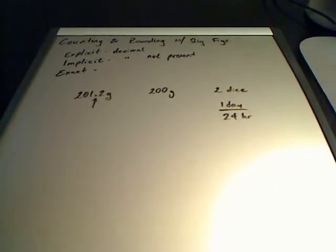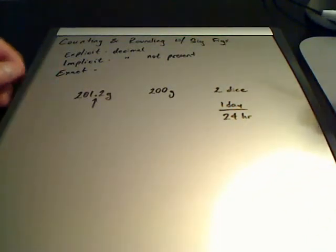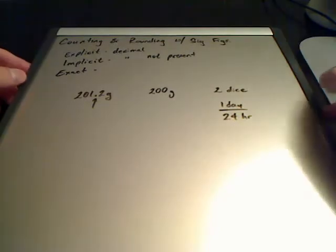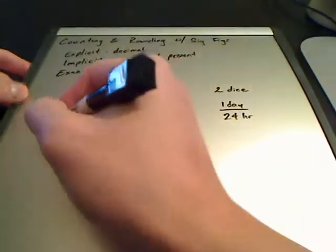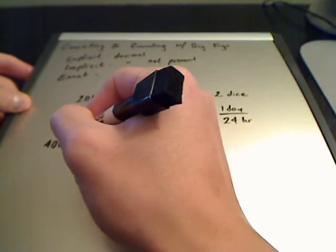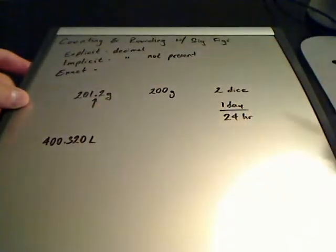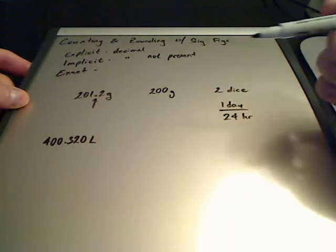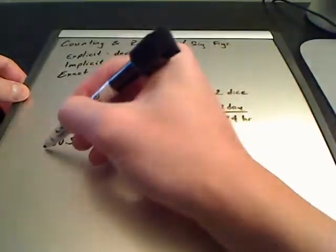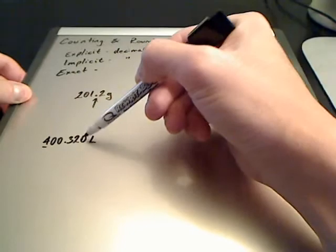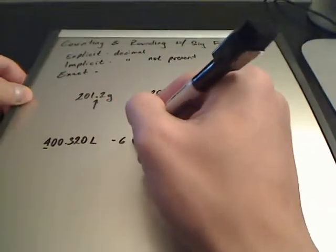Once we understand that, we can move into counting and rounding. For explicit and implicit, you always start with your first non-zero — any zeros in the front never count. Let's say we do 400.320 liters. It's explicit. The rule for explicit is you always start with your first non-zero, in this case the 4, and you count everything to the right: 4-0-0-3-2-0, giving a total of six sig figs.